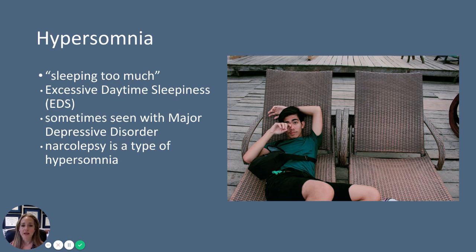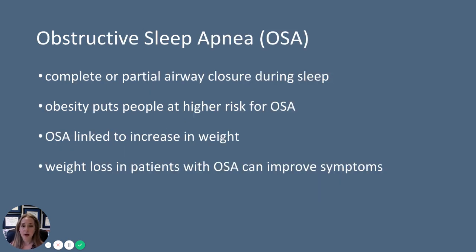Hypersomnia is basically sleeping too much. You could have excessive daytime sleepiness (EDS). Sometimes you can see hypersomnia with major depressive disorder, where you're depressed and sleeping too much during the day. Narcolepsy is a kind of hypersomnia — it's when you have a sudden urge to sleep, sometimes very quickly in the middle of the day. There are different kinds of narcolepsy, and it is considered to be a type of hypersomnia.